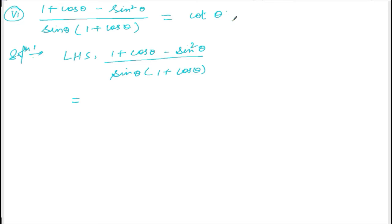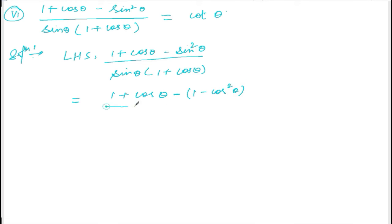We are going to convert this into cotθ. We can do this by converting sin²θ into cos²θ using the identity. So (1 + cosθ - sin²θ) becomes (1 - cos²θ), giving us (1 - cos²θ) divided by sinθ(1 + cosθ).